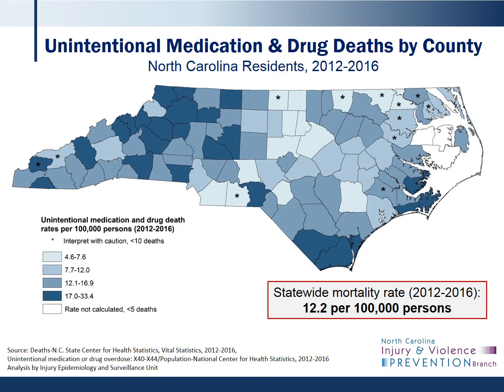This map shades the counties of North Carolina based on their respective unintentional overdose death rate. To provide greater reliability in county-level rate estimates, death counts for the five-year period were used. In counties with deaths less than five, rates were not calculated. The counties with stars had fewer than 10 deaths, so those counties' overdose rates should be interpreted with caution. The darker the shading, the higher the rate of unintentional medication and drug overdose during this time period. The overall statewide rate of unintentional medication and drug overdose deaths from 2012 to 2016 was 12.2 per 100,000 persons.